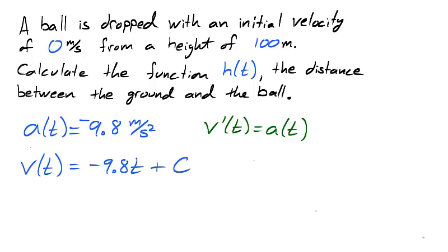Reversing the power rule for derivatives, we find that the velocity of the ball is negative 9.8 t plus c for some constant c.